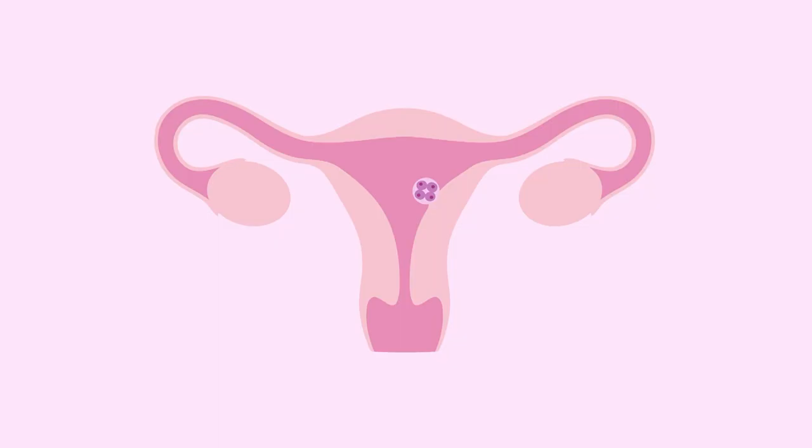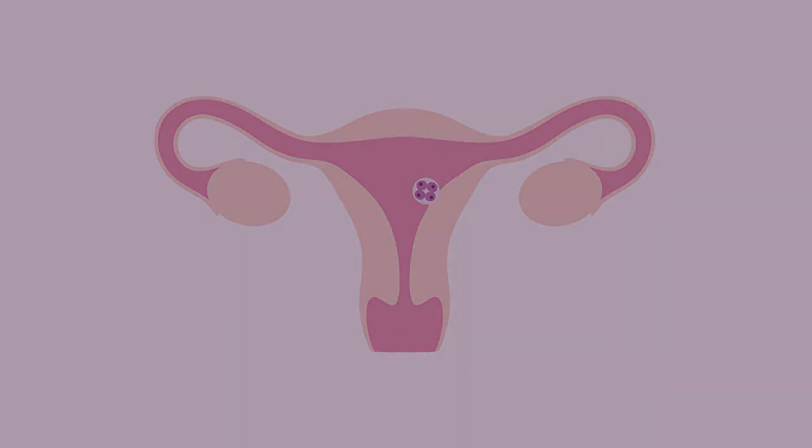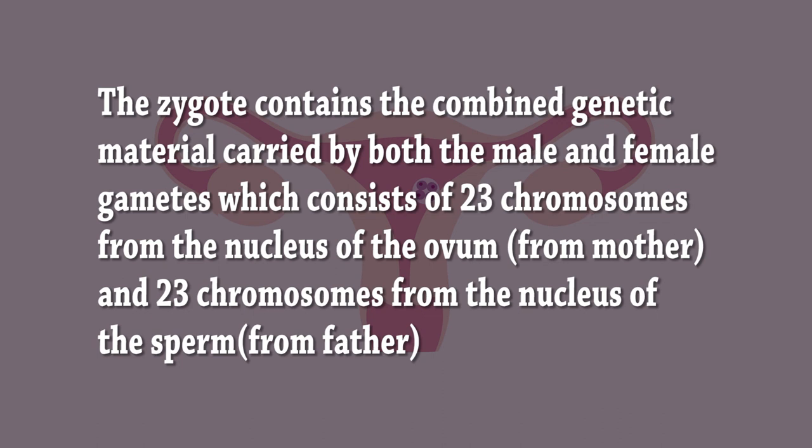So two cells fuse to become one cell, which we call a zygote. Fertilization takes place in the ampulla of one of the fallopian tubes. The zygote contains the combined genetic material carried by both the male and female gametes, which consists of 23 chromosomes from each parent.